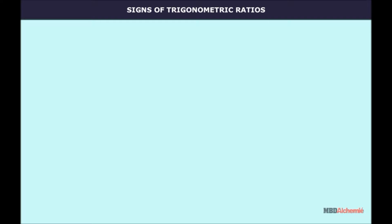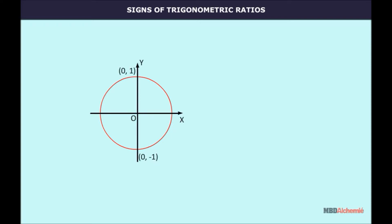Signs of Trigonometric Ratios. To find the signs of trigonometric ratios in all four quadrants, draw a unit circle with center at O and radius one unit. Let P be any point on the circle such that angle XOP is theta, then OM is equal to A, MP is equal to B, and OP is equal to 1. Now let's see how the sign of trigonometric ratios varies in the four quadrants.